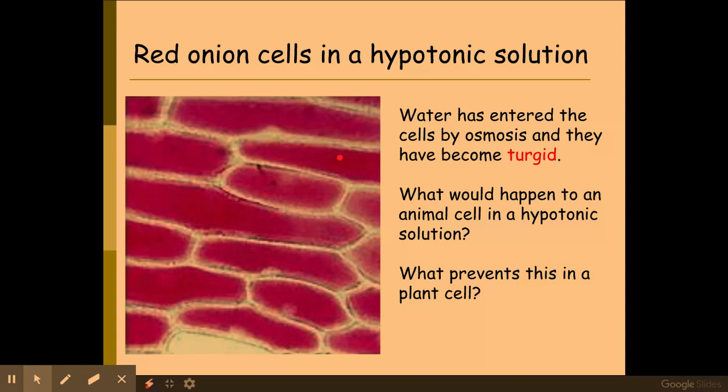Now, in plant cells, you do get marks for explaining that water goes into the vacuole, that the vacuole pushes out and puts pressure onto the cell wall to make those cells turgid.